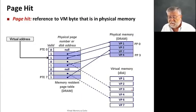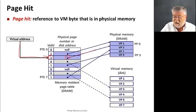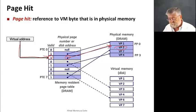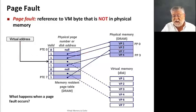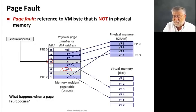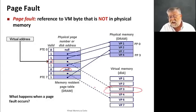On a page hit, we use our virtual address to index the page table, find that it is valid, and it provides us with an address in physical memory. We now know where that page is and can access it using physical addresses. We've had to do one access of memory to get the page table entry and then a second access to actually get the data at that physical address. A page fault occurs when we access a page that is not valid — its address may be on disk, or it could be just an unallocated page.